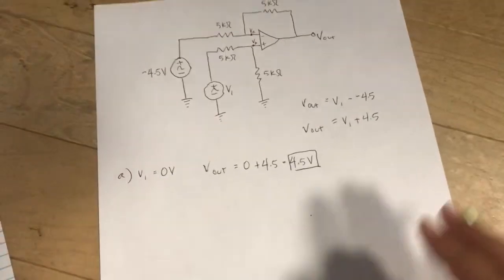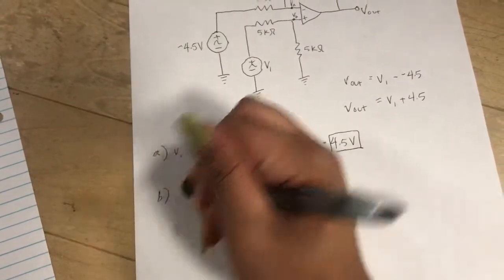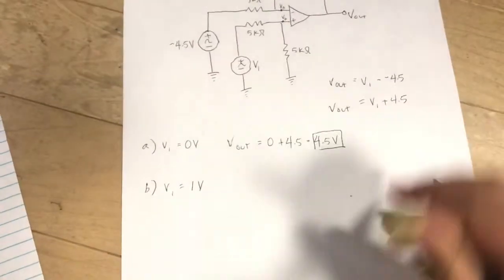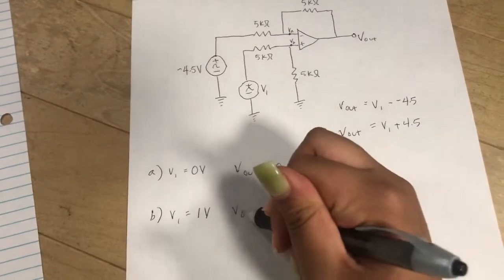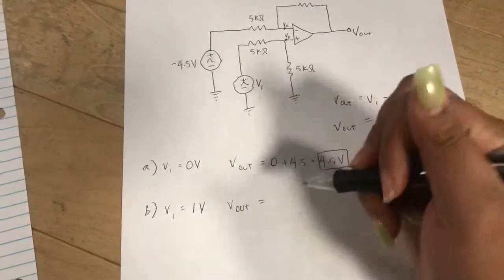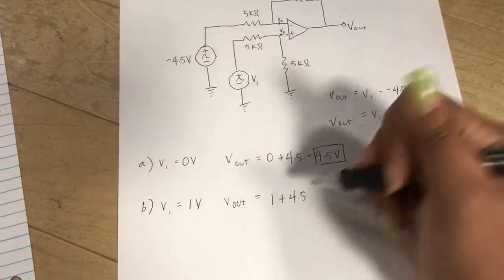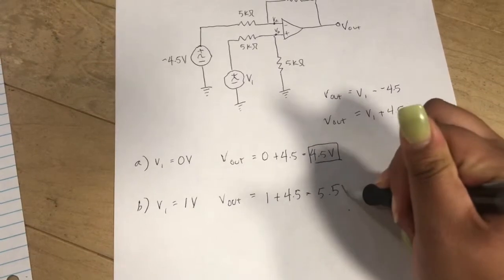Next, it gives us 1 volt. Then we can say Vout equals 1 plus 4.5 equals 5.5 volts.